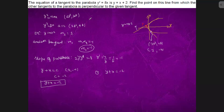Now we have y + x = −2, and we have y − x = 2. If we add them, y will come out to be 0, and consequently x will come out to be −2. So this is the point on the tangent — this is the point P we have to find, which is (−2, 0).